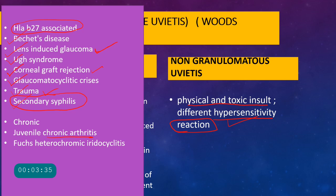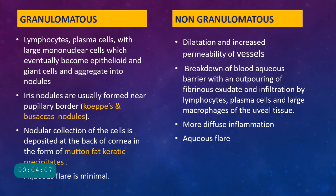This Woods classification is not very specific because there is overlap in certain conditions — for example, viral infections and phacoanaphylactic lens-induced conditions are controversial as to whether they cause granulomatous or non-granulomatous uveitis.